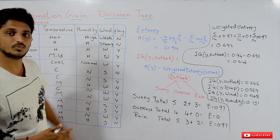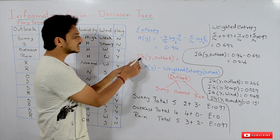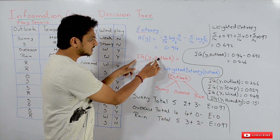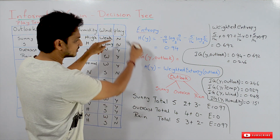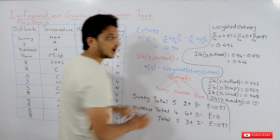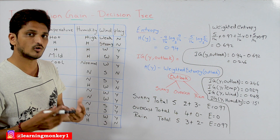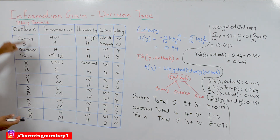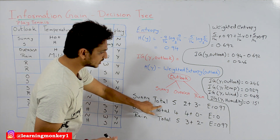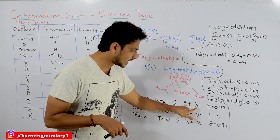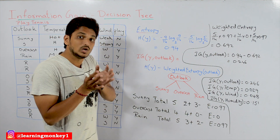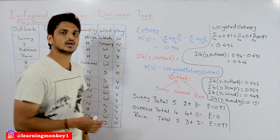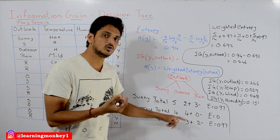How to calculate information gain value? Information gain for (y, outlook) — we are calculating information gain for outlook now. The equation is: H(y) minus the weighted entropy of outlook. In outlook, we have three separations: sunny, overcast, and rain. Sunny has 5 total data points — 2 positive and 3 negative — entropy = 0.97. Overcast has 4 data points, all positive and 0 negative — entropy = 0. Rain has 5 total points, 3 positive and 2 negative — entropy = 0.97.